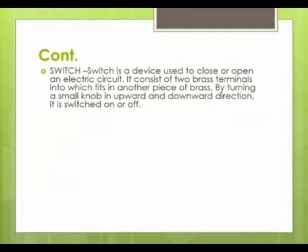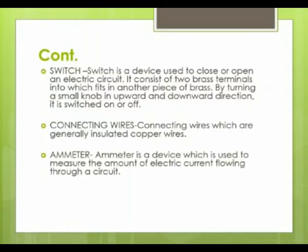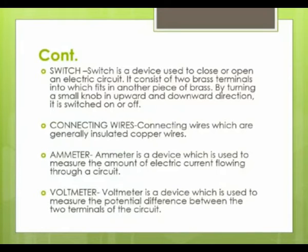A switch is a device used to close or open an electric circuit. It consists of two brass terminals into which another piece of brass fits. By turning a small knob in the upward and downward direction, it is switched on or off. Connecting wires are generally insulated copper wires. An ammeter is a device used to measure the amount of electric current flowing through a circuit. A voltmeter is a device used to measure the potential difference between the two terminals of a circuit.